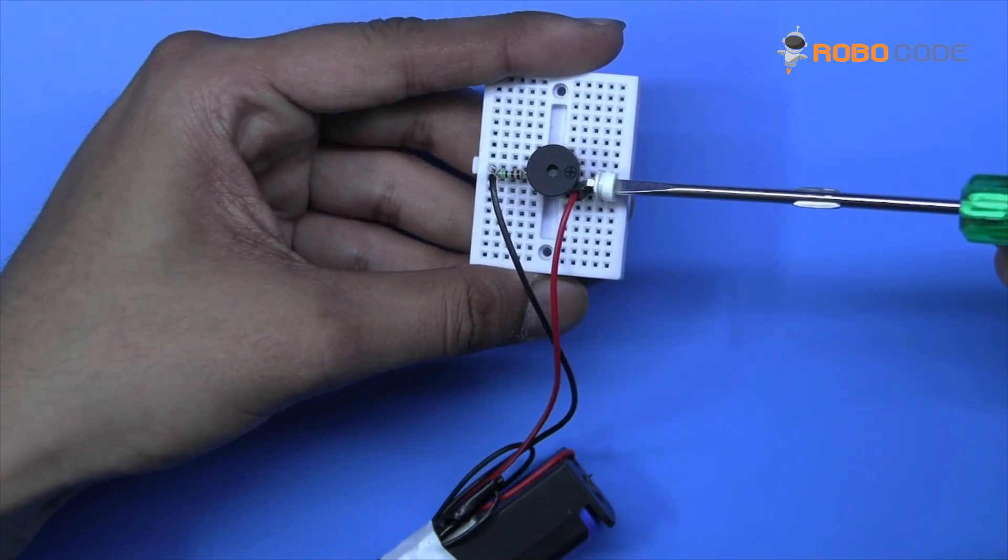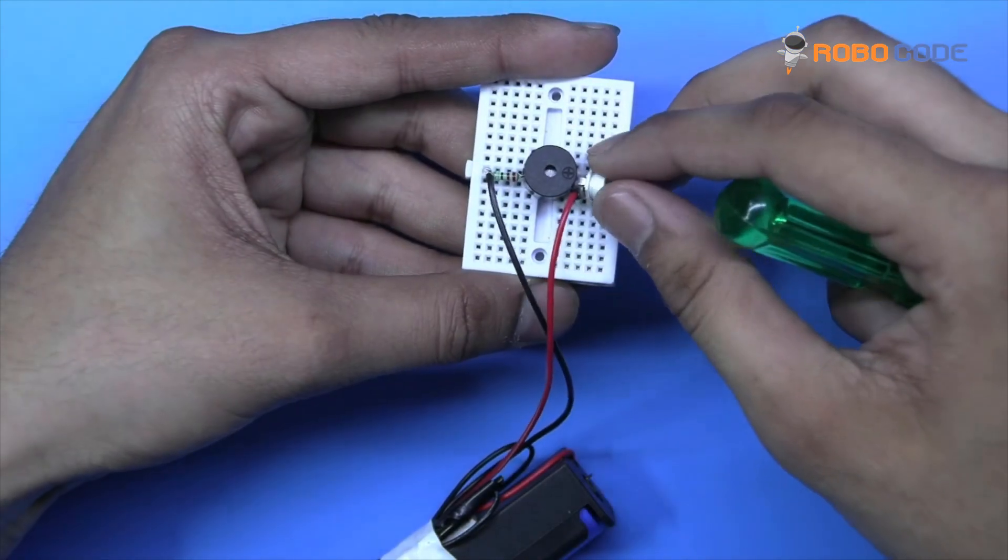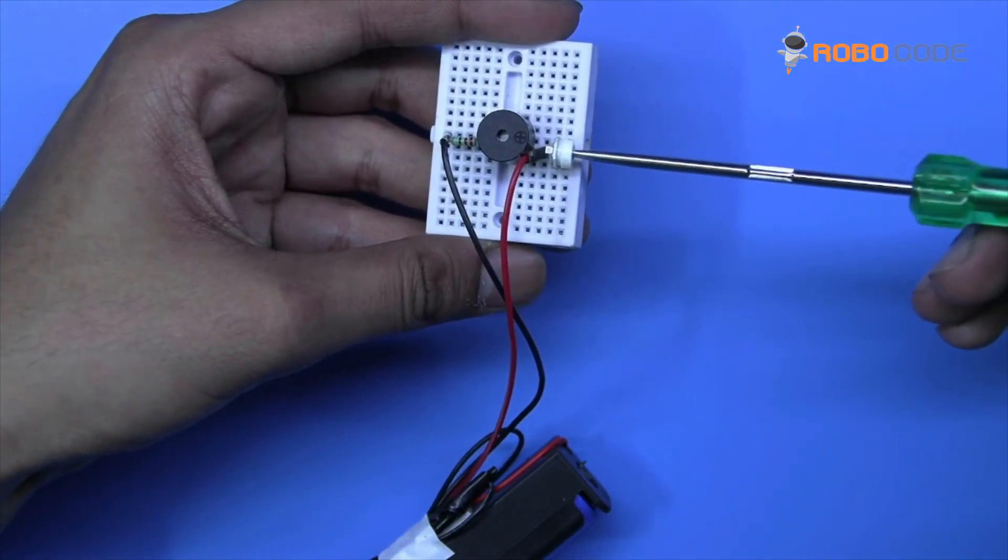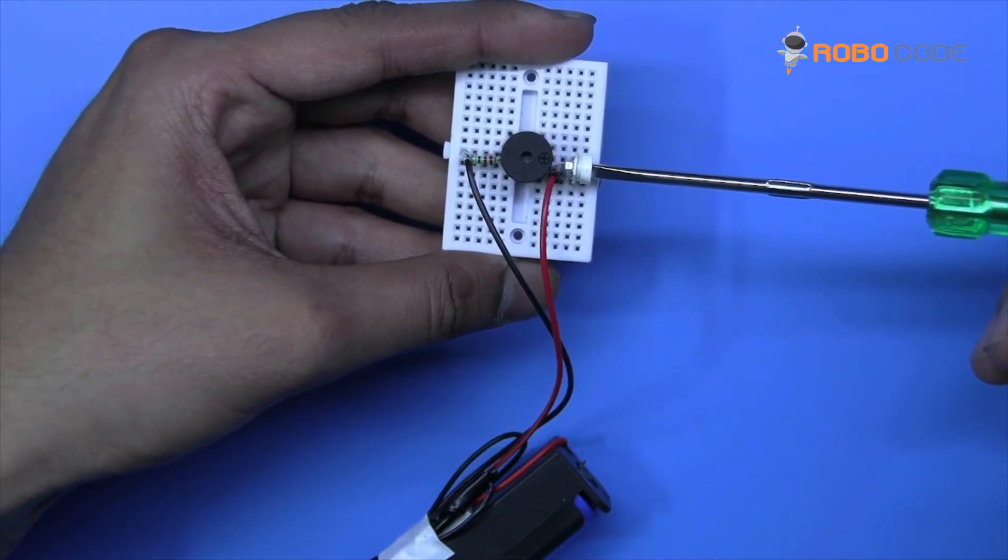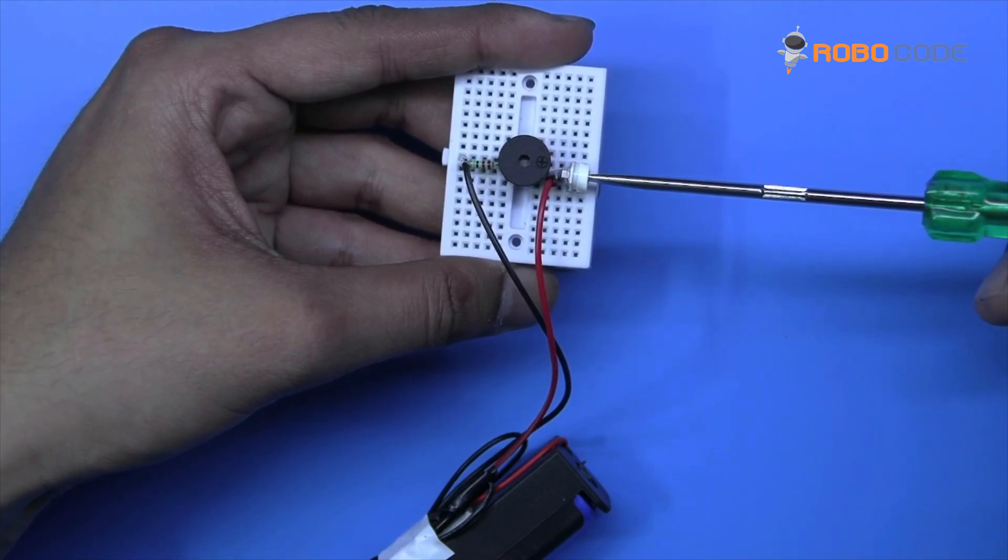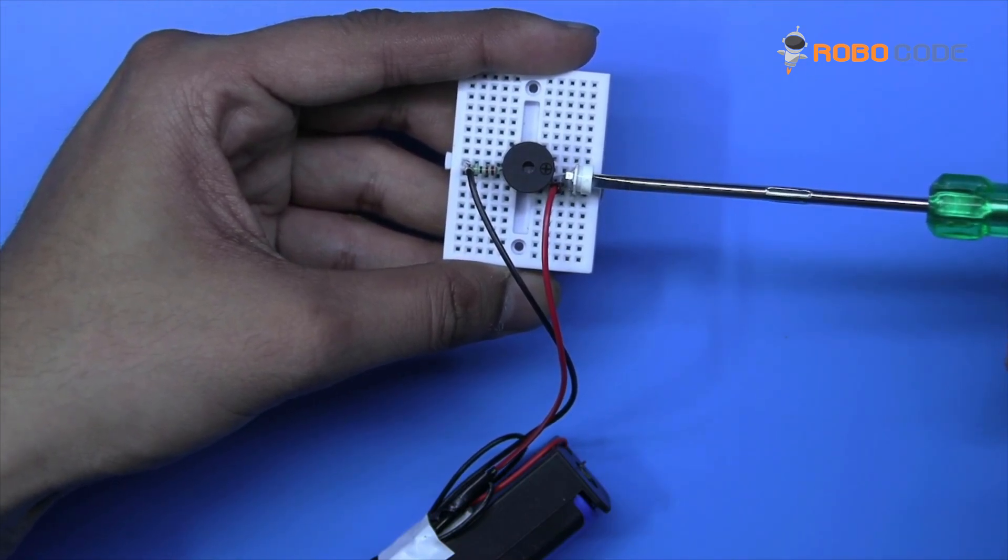As you move the potentiometer with the screwdriver, you will hear the sound, and that's how you can control the sound of the buzzer.